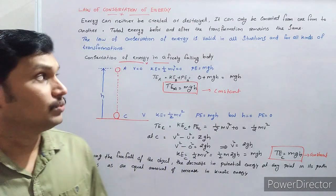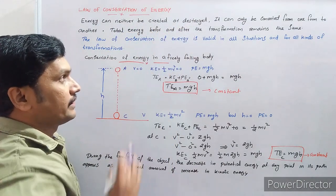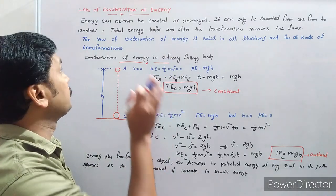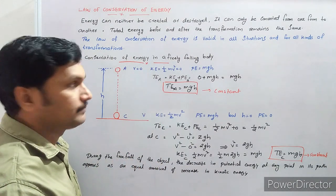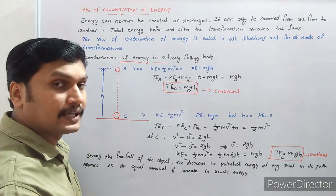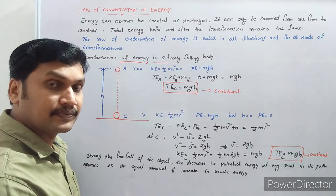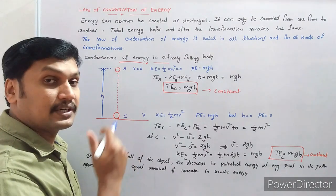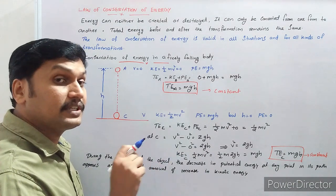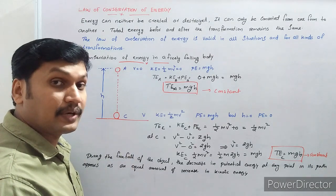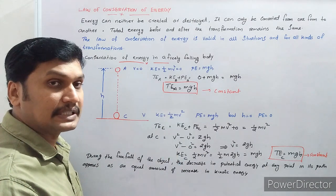This is known as the law of conservation of energy. According to the law of conservation of energy: energy can neither be created nor destroyed; it can only be converted from one form to another. The total energy before and after the transformation remains the same. For example, we can convert electrical energy into light energy, and light energy into electrical energy — energy conversion is taking place, but we are not creating new energy.